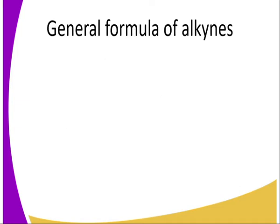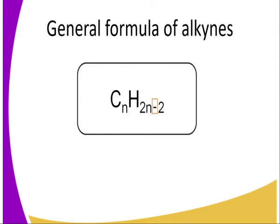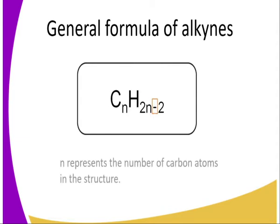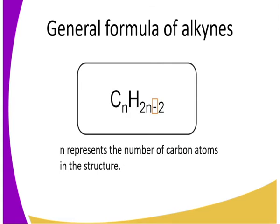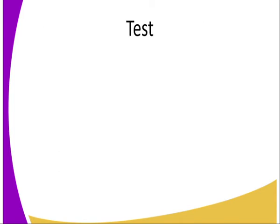The general formula of alkynes is CₙH₂ₙ₋₂, where N represents the number of carbon atoms in the structure. So we can have 1, 2, or even 3 carbon atoms. The easiest way to get the molecular formula of this compound is by substituting N with the number of carbon atoms along that chain.